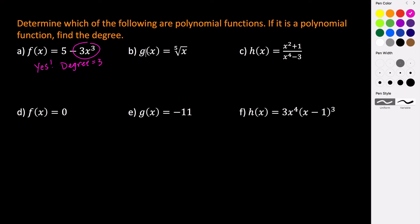In part b we have g(x) equals the fifth root of x. The fifth root of x can be rewritten as a power function: we take the radicand and raise it to a fractional power, where the index of the radical is the denominator and the radicand's exponent is the numerator. So this is actually x to the one-fifth power. Because the exponent of x is a fraction and not an integer, this is not a polynomial function.